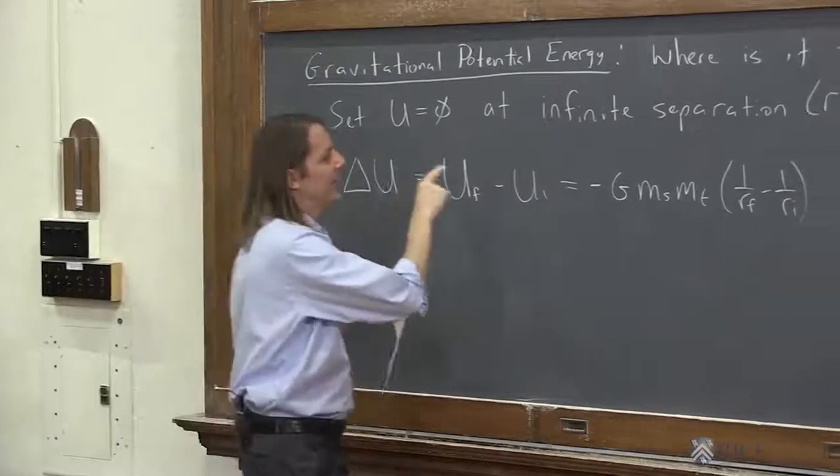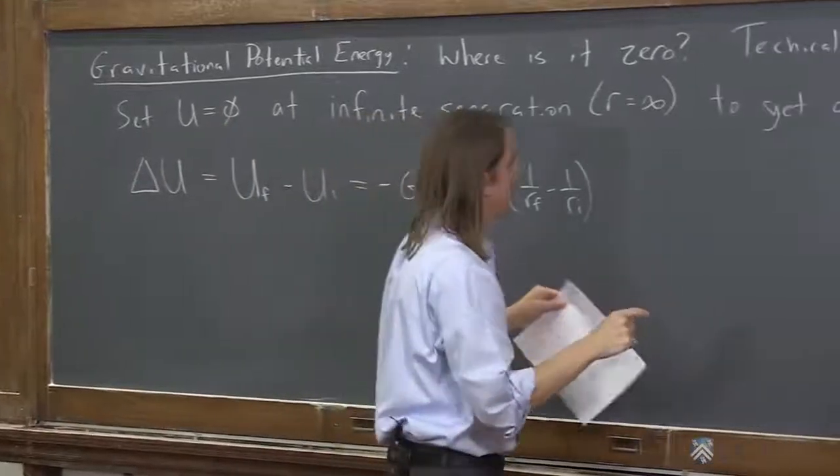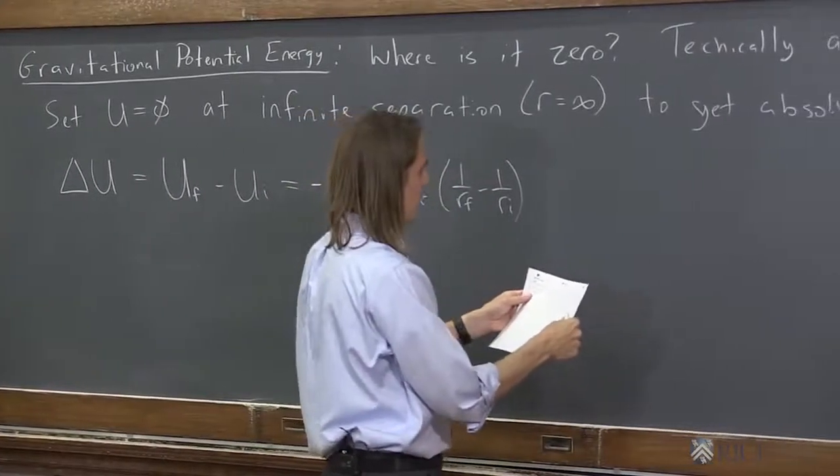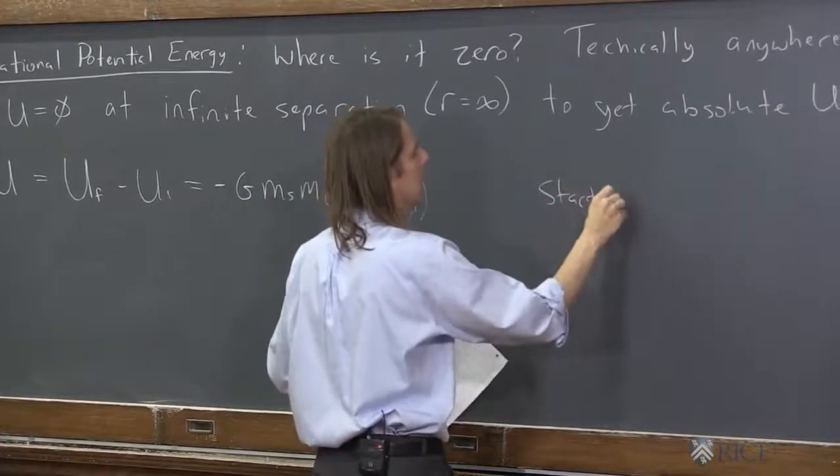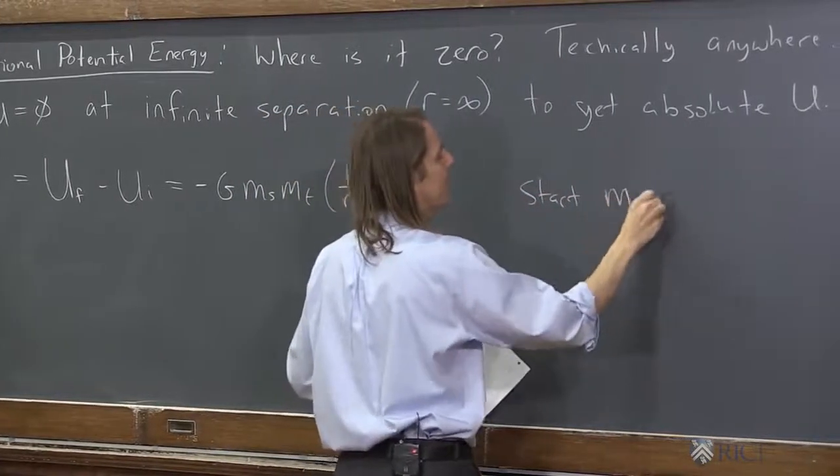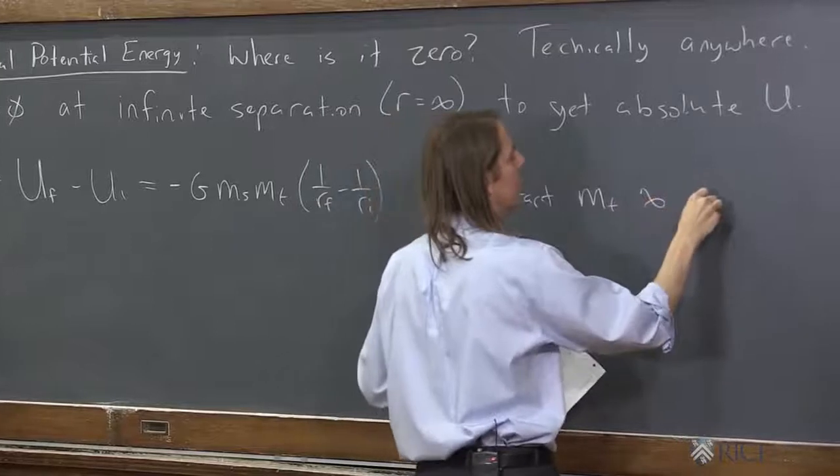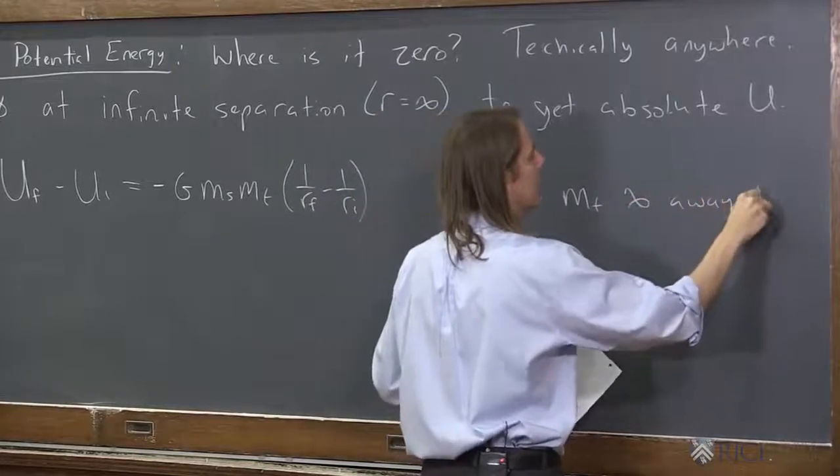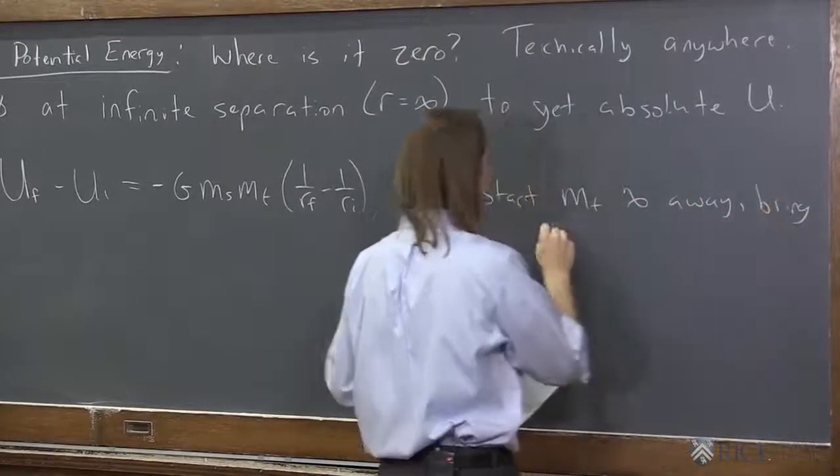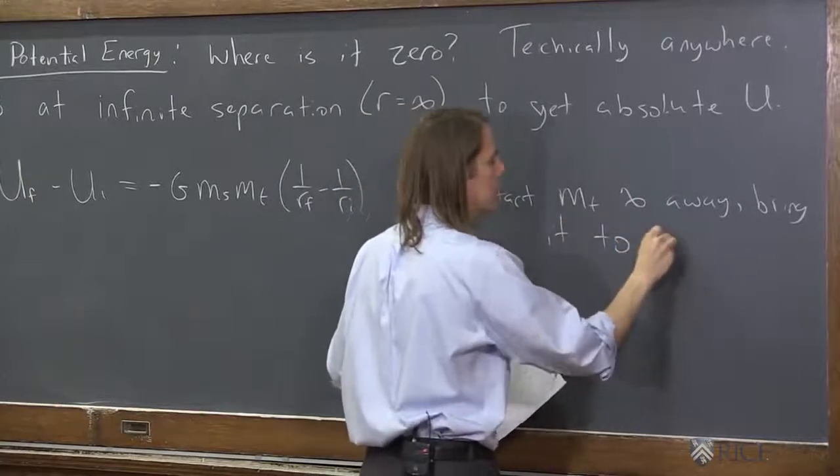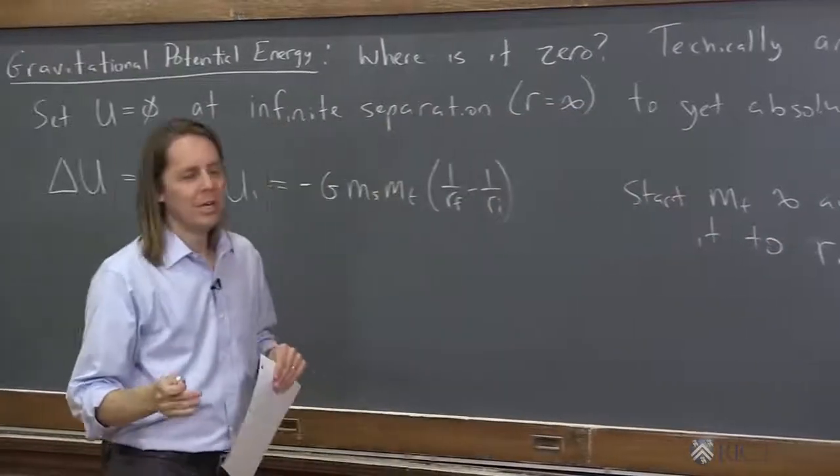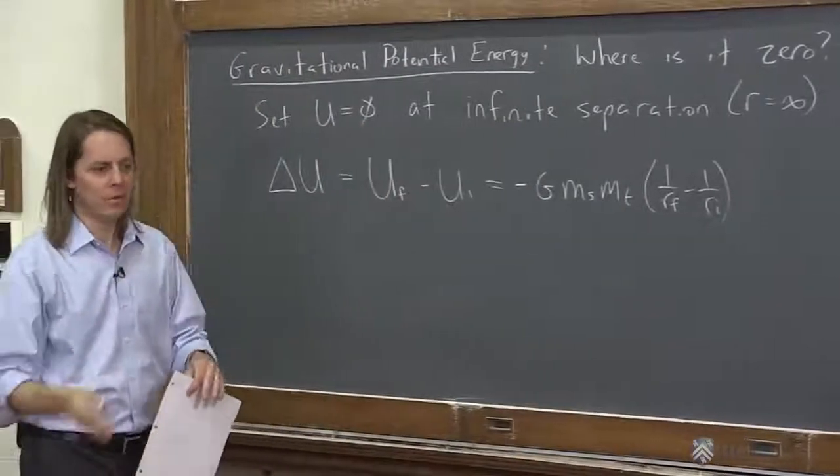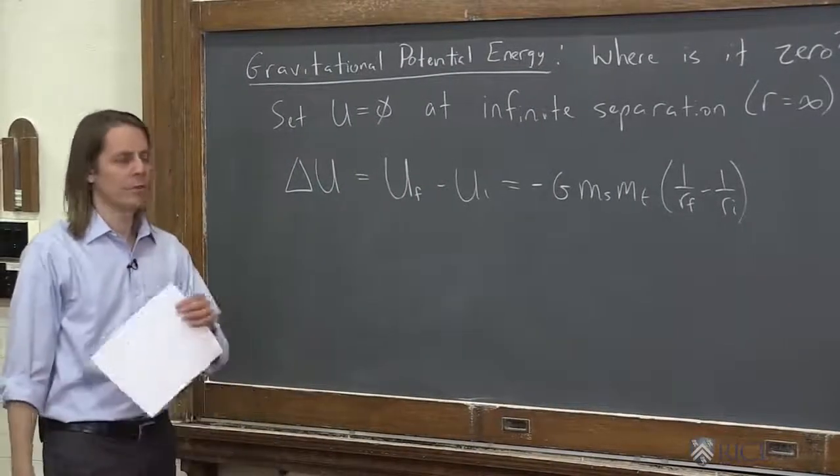But now, let's apply this idea. What we're going to do is, we're going to start the test mass infinitely far away, and then bring it to r. Because if we get this absolute energy going, we don't have to think about initial and final. It'll just be this position at r. Where is it?